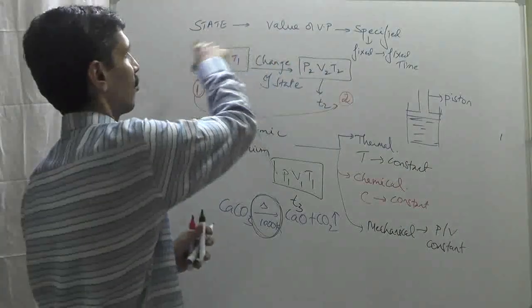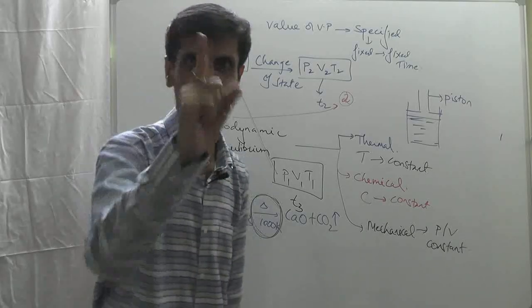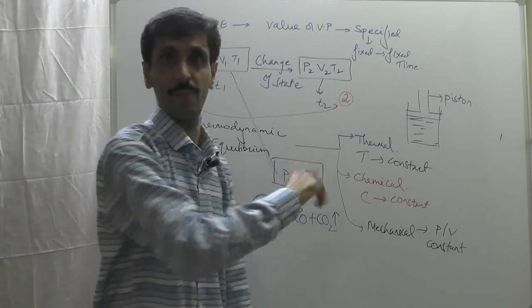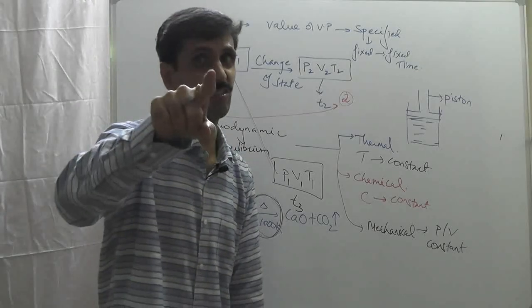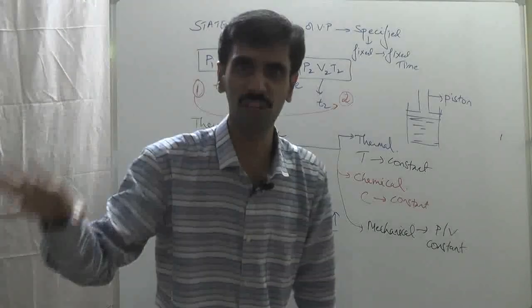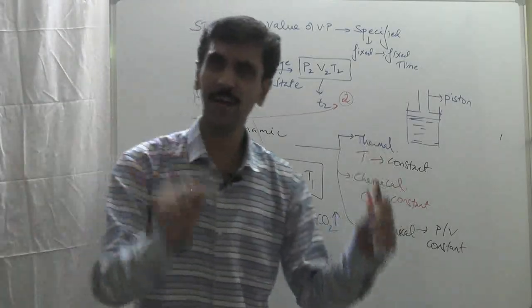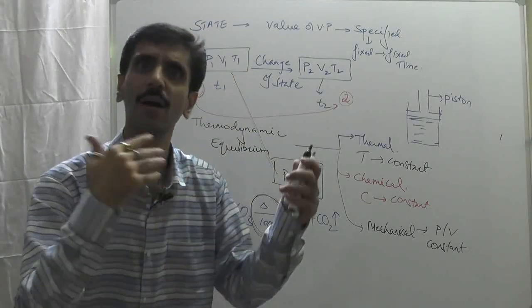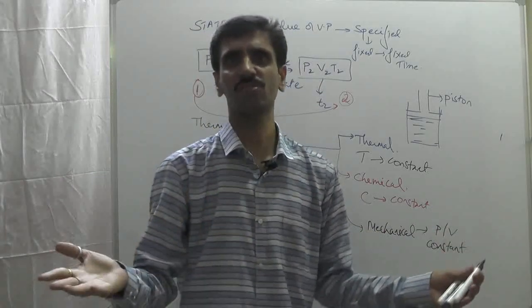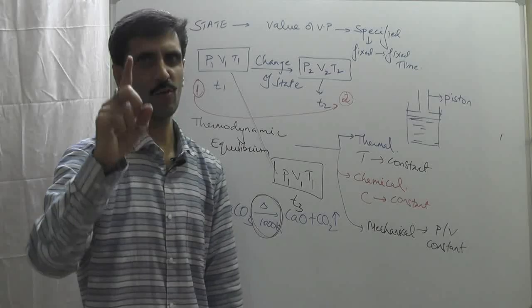Let's recap. State is when the values of the variable properties are fixed and specified at one time. If the time changes and the value changes, that is a change of state. If time changes but the value remains the same, that is thermodynamic equilibrium. In thermal equilibrium, temperature is constant; in chemical equilibrium, chemical composition or concentration is constant; in mechanical equilibrium, pressure or volume is constant.